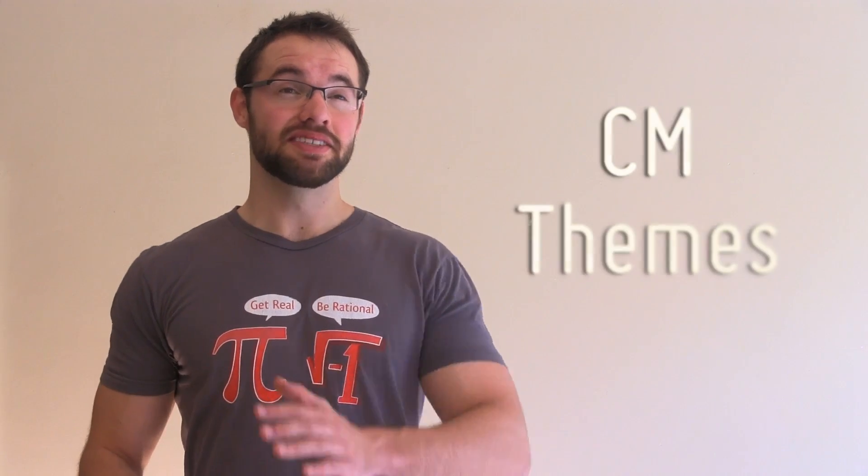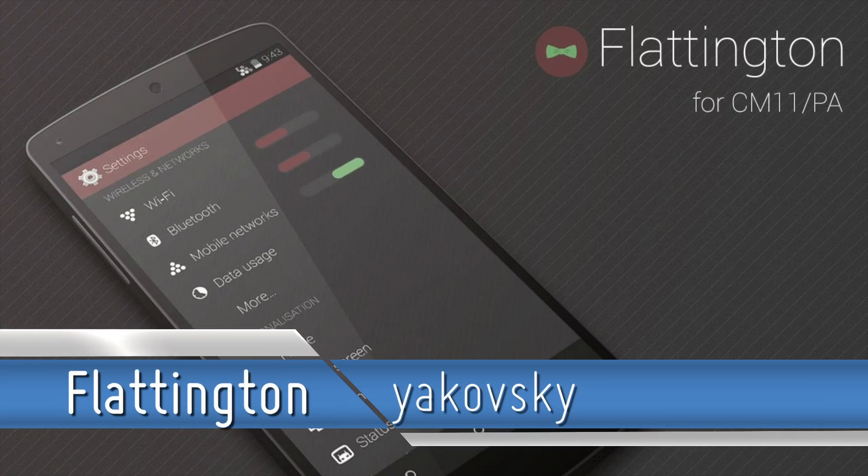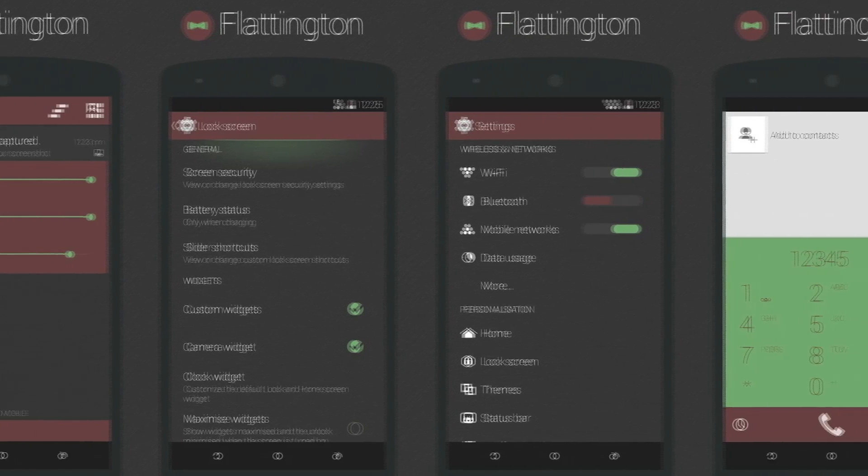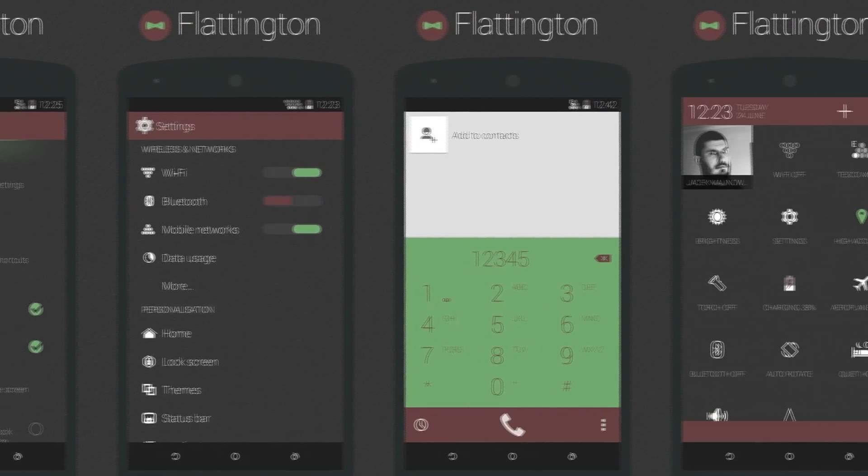Next up, CM themes. CM themes everywhere. No, I'm not even joking, there's a lot out right now but they make your phone look incredible so I'm not complaining. First up we have Flattington by Yakovsky. After the success of Yuffie, Jacek decided to try his hand at CM themes and boy did he do a good job.